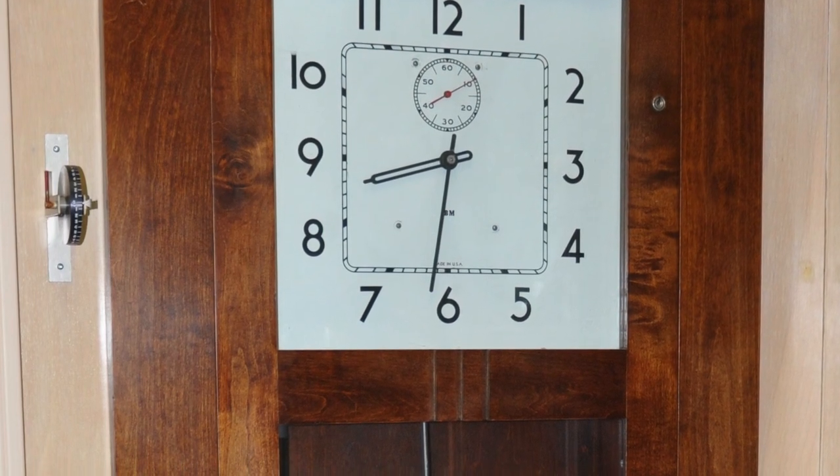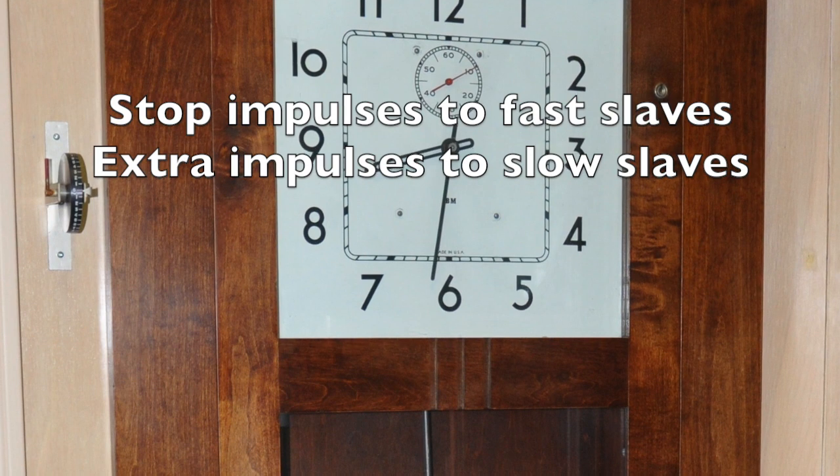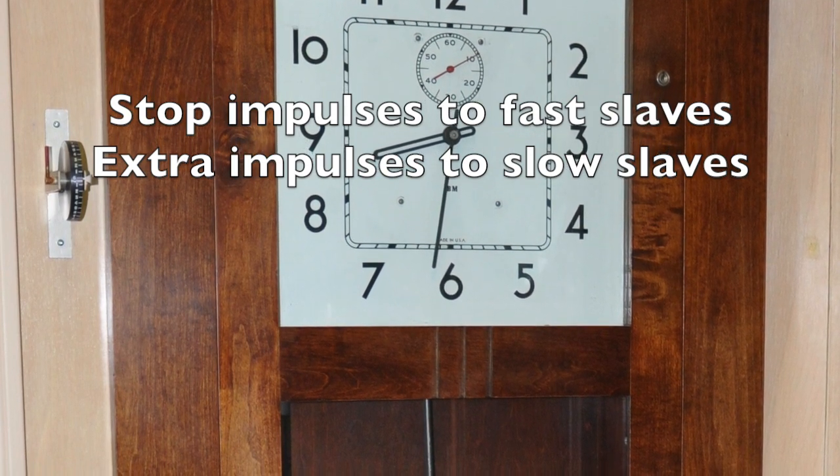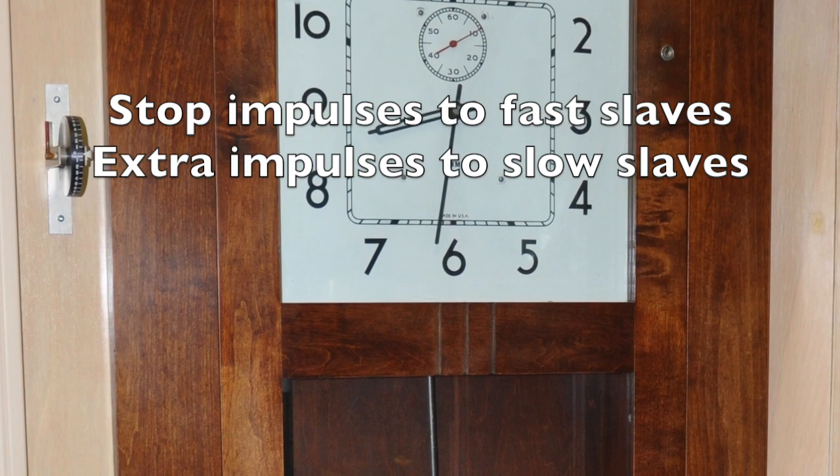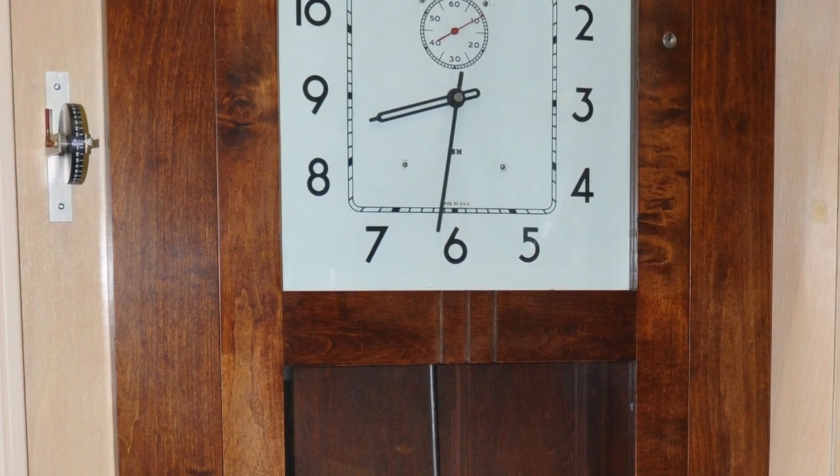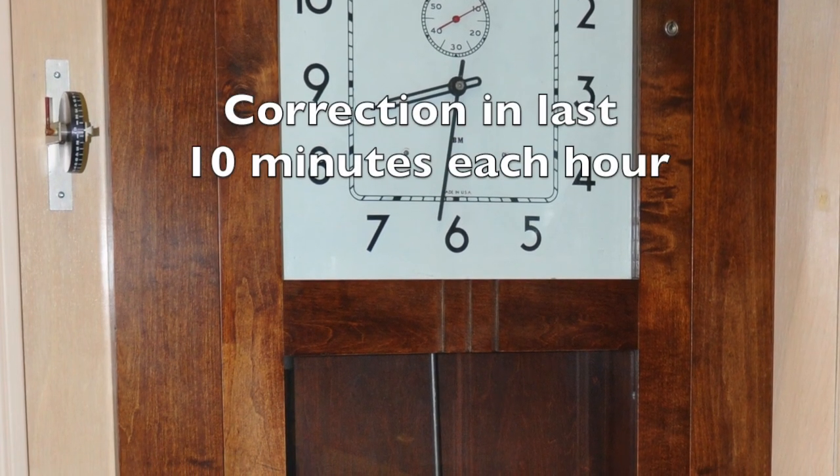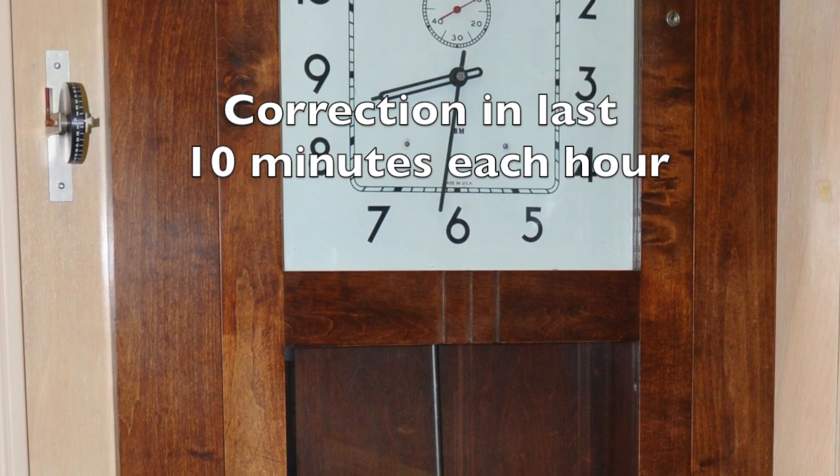Two different lines make it possible for the master to stop impulses to slaves that are fast or send extra impulses to slaves that are slow. The master correction process takes place in the last 10 minutes of each hour.